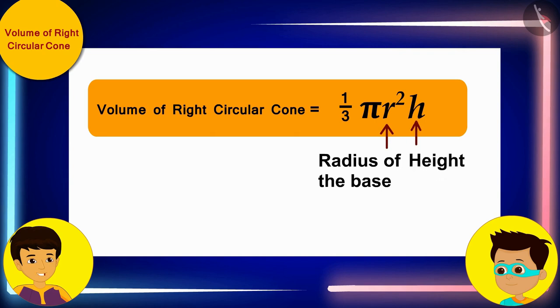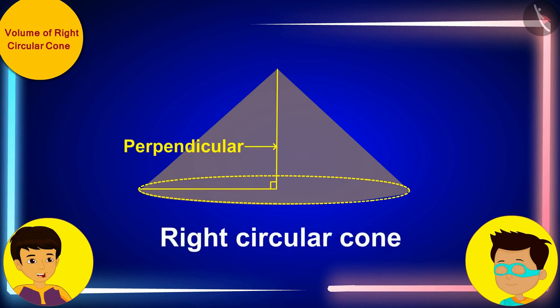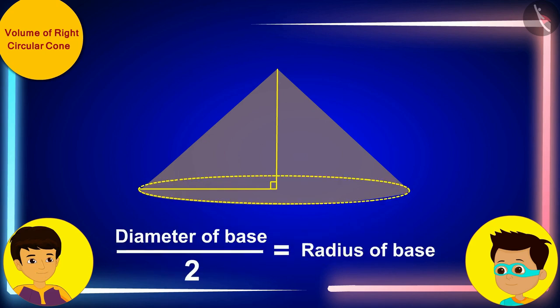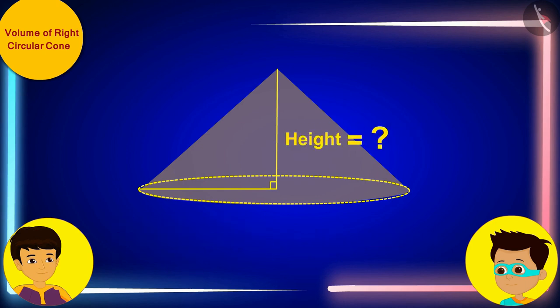But Thomas, this is a difficult one. We can see that the height of this sand pile is perpendicular to its base so it is a right circular cone and we can also find the radius of its base by measuring the diameter. But we cannot measure its height, so how can we find its volume?